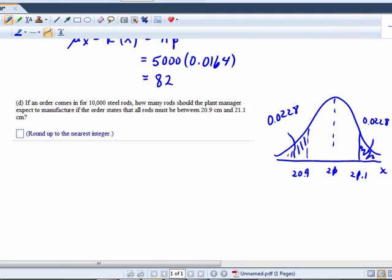Because of symmetry. So what proportion of rods do I expect to discard? I expect to discard any less than 20.9 and I'm going to discard any that are greater than 21.1. So the proportion that are going to be discarded is 0.0456, proportion discarded.